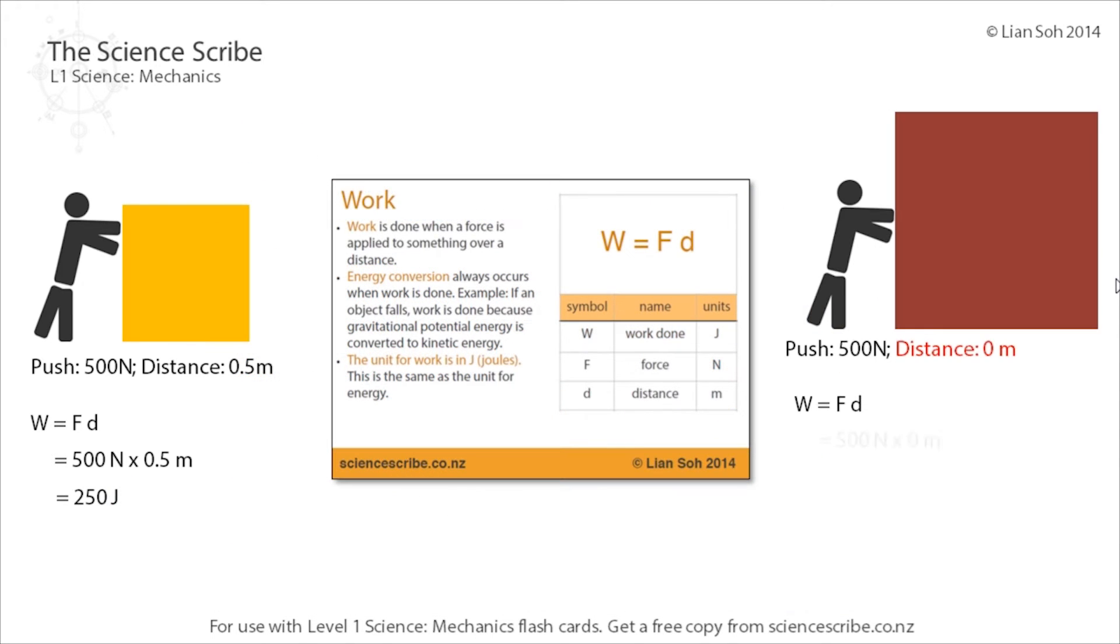Let's say we've got a different example, this time with a much bigger box. They're pushing with the same amount of force, 500 newtons, but let's say that box doesn't move at all. I'm covering a distance of 0 metres, so when I put the 0 into the work formula, I end up getting 0 joules, and that works out because we said that for work to be done, you've got to apply a force and move something over a certain distance.